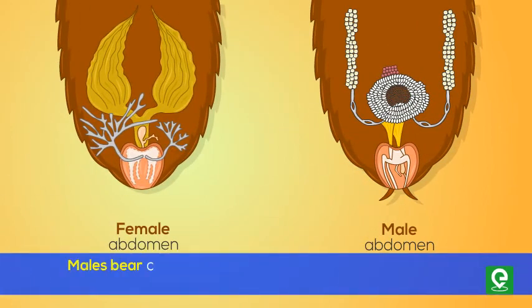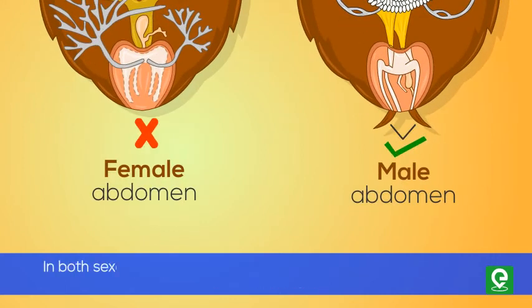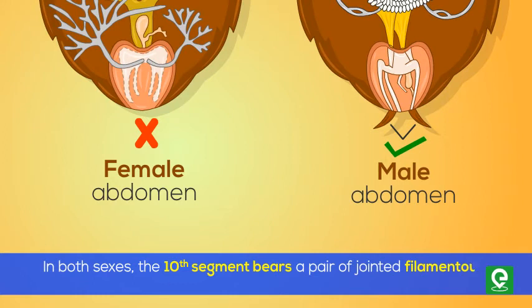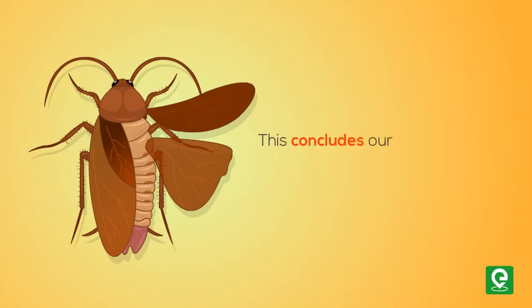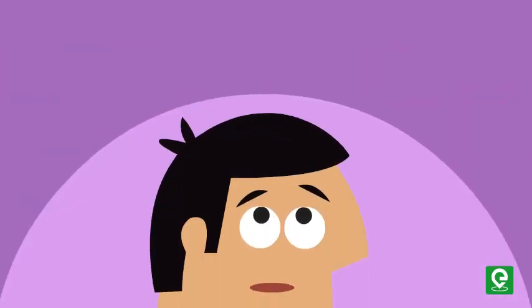Males bear a pair of short, thread-like anal styles, which are absent in females. In both sexes, the 10th segment bears a pair of jointed filamentous structures called anal cerci. This concludes our video about the morphology of the cockroach.